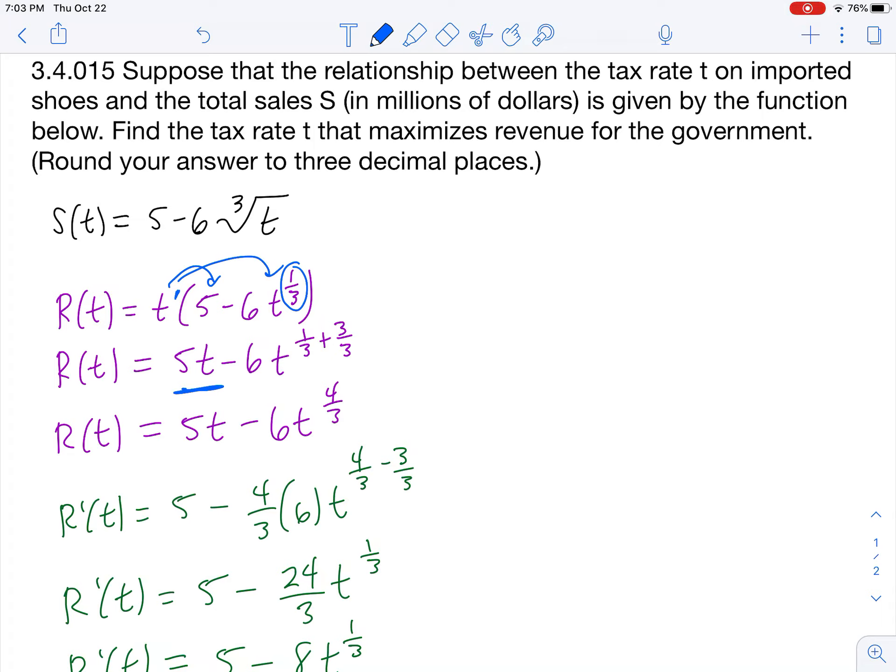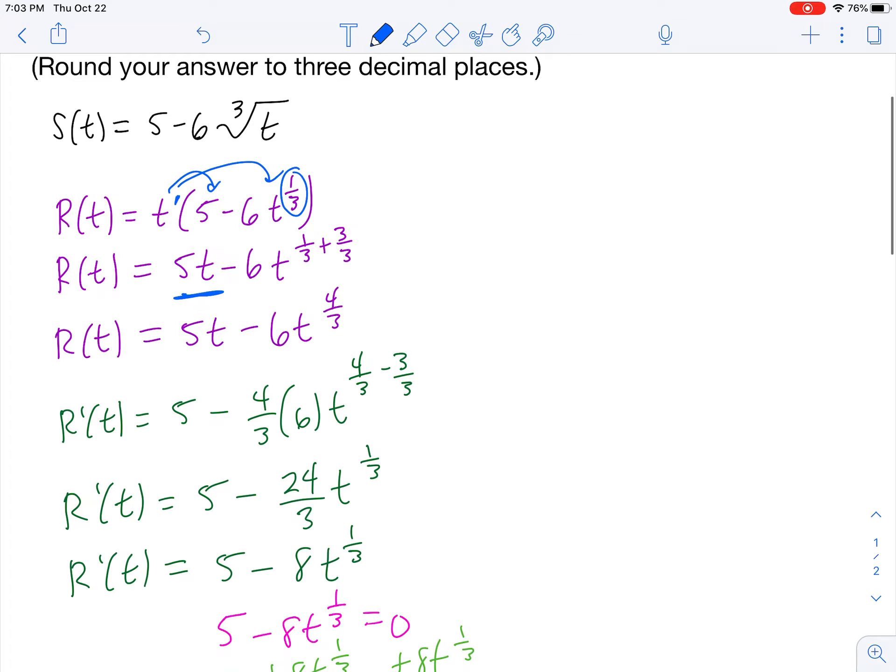Adding 1 to one-third is the same thing as adding 3 over 3. When we add fractions, we only add the numerator. 1 plus 3 is 4, and the denominator stays the same. So we have 5t minus 6t to the four-thirds power.